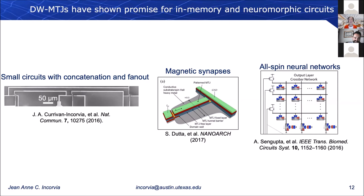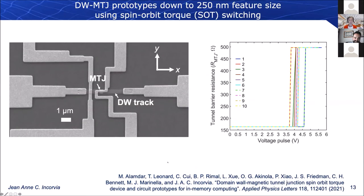These Domain-Wall MTJs have a lot of promise for both in-memory and neuromorphic circuits. We've demonstrated small circuits with concatenation and fan-out, magnetic synapses, and all-spin neural networks. In our prototype, we've shown very improved cycle-to-cycle variability — around 10% cycling variability over 10 different cycles — and a very good on-off ratio of around 200%. More information about the prototype results can be found in our recent Applied Physics Letters paper, as the rest of this talk will be in simulation.